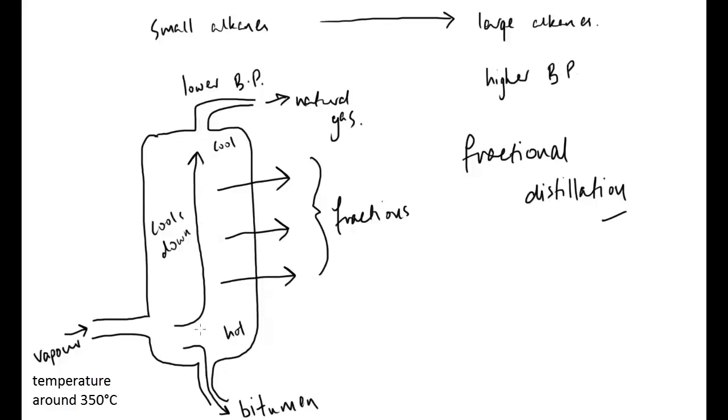So, once more, vapor enters, cools down as it rises. As it cools, the various fractions, the various hydrocarbons in here, will reach their boiling point. When they reach their boiling point, they are pumped off. And because there are different boiling points, it actually separates the crude oil into these various portions.